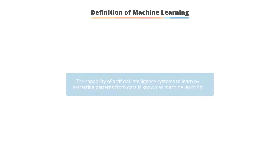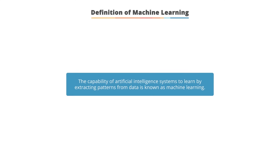So what is machine learning? Machine learning is the capability of an artificial intelligence system to learn by extracting patterns from data. It usually delivers quicker, more accurate results to help you spot profitable opportunities or dangerous risks.